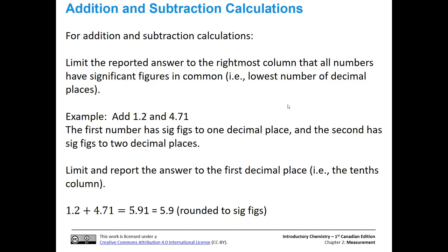For addition and subtraction calculations, we're going to limit the reported final answer to the rightmost column that all numbers have in common — I like to think of that as the lowest number of decimal places. So if we have 1.2 and 4.71, the number 1.2 has one decimal place and 4.71 has two, so we limit to one decimal place. We add them together to get 5.91, and then round it down to 5.9, rounding to one decimal place.